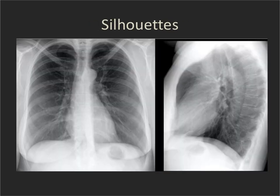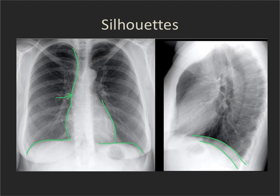Where do we see silhouettes on a chest X-ray? We see the silhouettes of both hemidiaphragms on both frontal and lateral views. We see the silhouettes of the heart — the right heart border and the left heart border. We see the right side of the mediastinum, the ascending aorta, the aortic notch, and the lateral side of the descending aorta. On the lateral chest X-ray, we see the posterior and anterior aspects of the heart, the anterior aspect of the ascending aorta, and most of the aorta throughout.